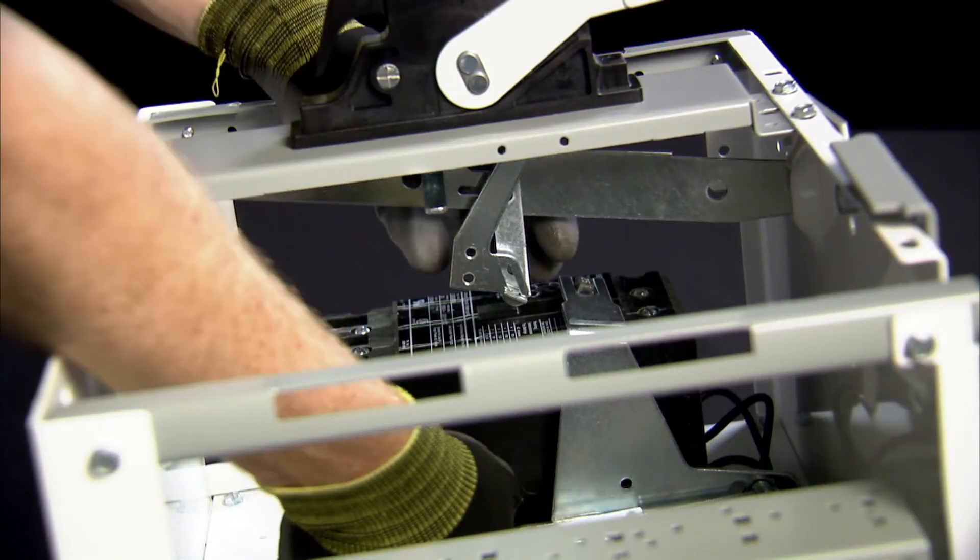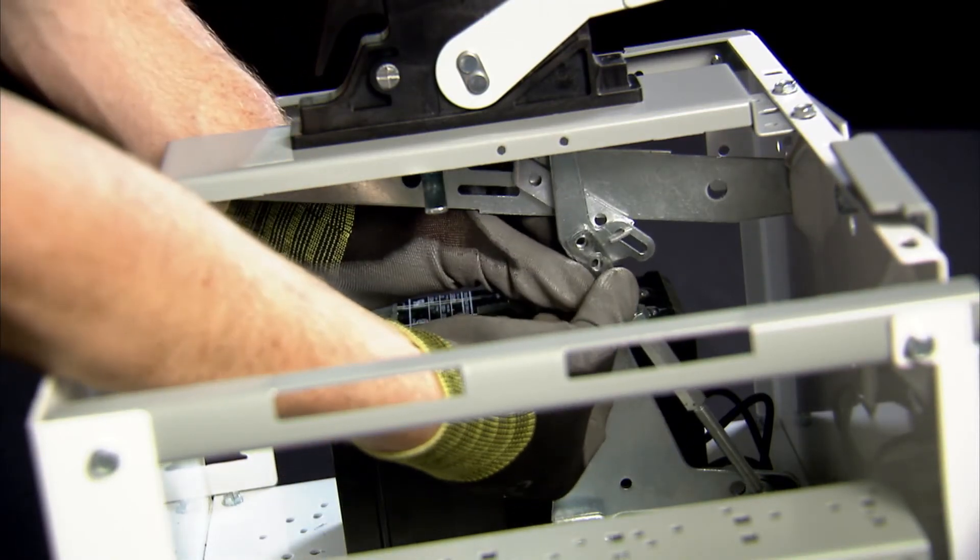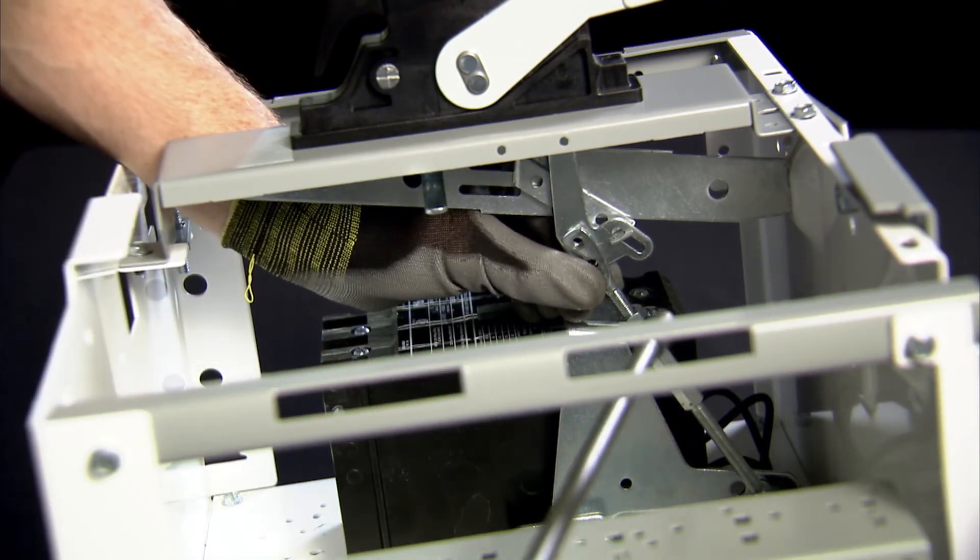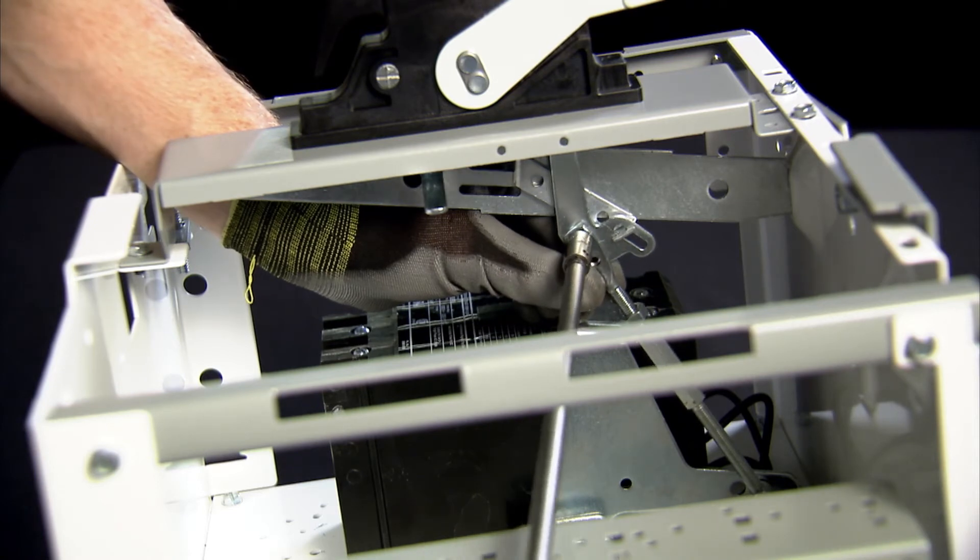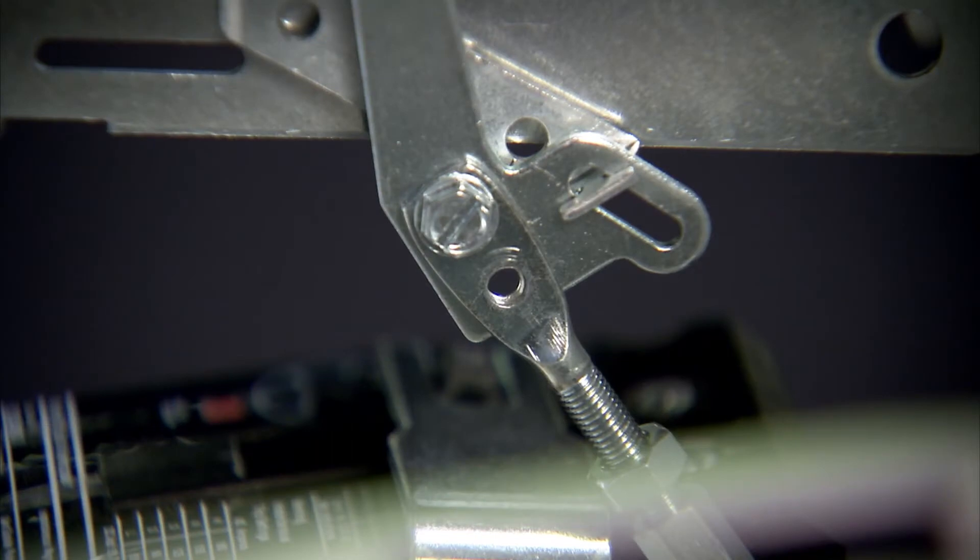The handle linkage assembly must then be attached to the breaker operator. The length of the rod attached to the breaker operator may need to be adjusted to align the screw holes. Twist the turnbuckle to adjust the length and then fasten the arm to the linkage with the provided screws.